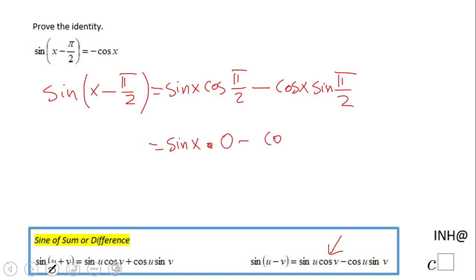Minus cosine of x and sine of pi over 2, that is 1. And whenever we multiply by 0, that is 0 minus cosine of x. And so the final answer is negative cosine of x, which is the right hand side.